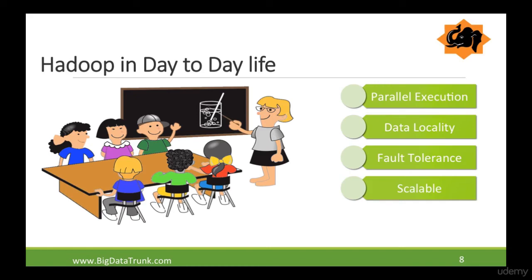The fourth principle is scalable. You may have understood by now that the solution the teacher came up with is quite scalable — she is not concerned about the number of students going from 50 to 100 or even thousands. Similarly, in a Hadoop cluster you can increase the processing power by merely increasing the number of slave nodes, which is called horizontal scalability. You can horizontally keep on adding slave nodes and improving the performance of your cluster.